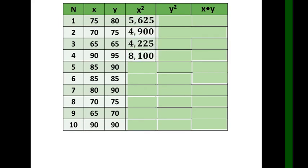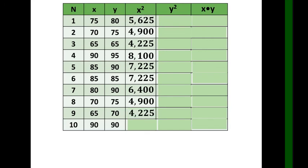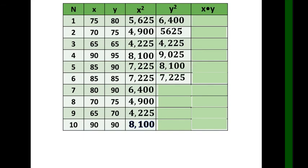To solve for Pearson r in Problem 2, we compute x squared by squaring each x value: 75²=5625, 70²=4900, 65²=4225, 90²=8100, 85²=7225, 85²=7225, 90²=8100, 75²=5625, 75²=5625, 90²=8100.